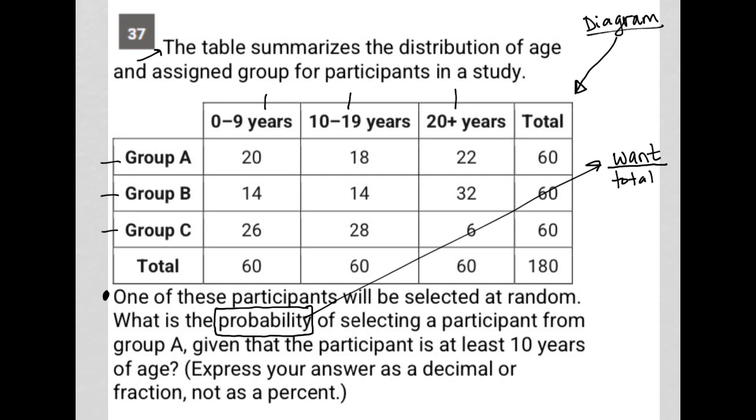So what is the probability of selecting a participant from group A, so group A is here, given that the participant is at least 10 years of age?